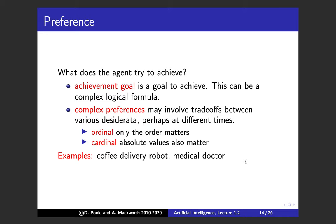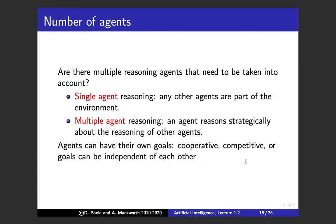Another dimension is the number of agents. For nearly all of this course we'll focus on single-agent reasoning, treating all other agents as part of the environment. Multiple-agent reasoning — where an agent reasons strategically about other agents' reasoning — is much more complicated. Agents can have their own goals that are cooperative, competitive, or independent of each other, making multi-agent reasoning substantially harder than single-agent reasoning.